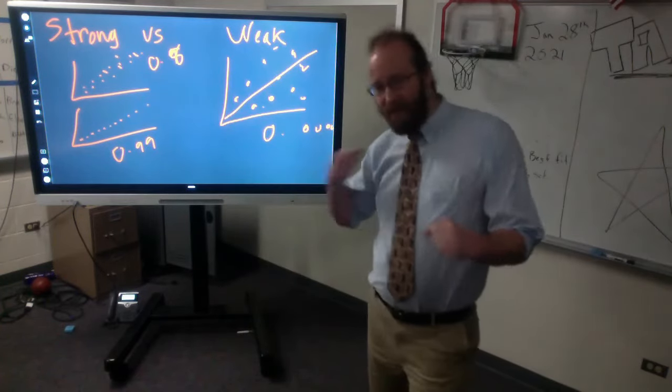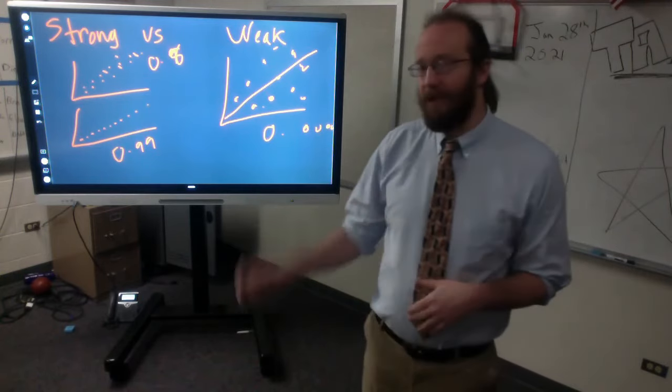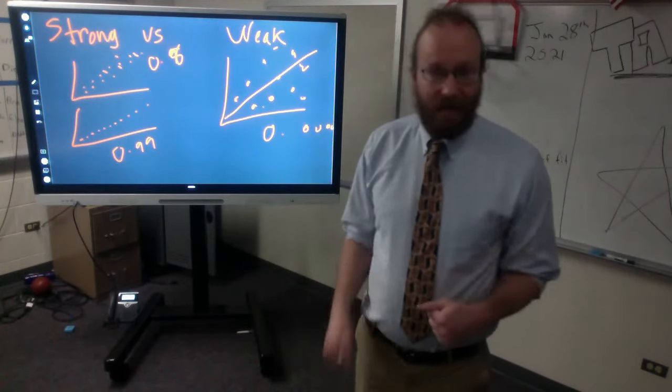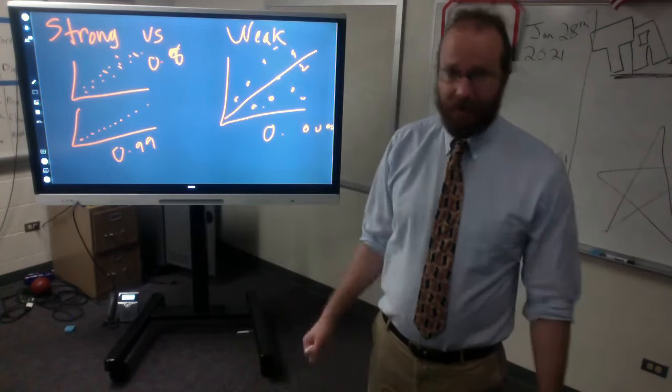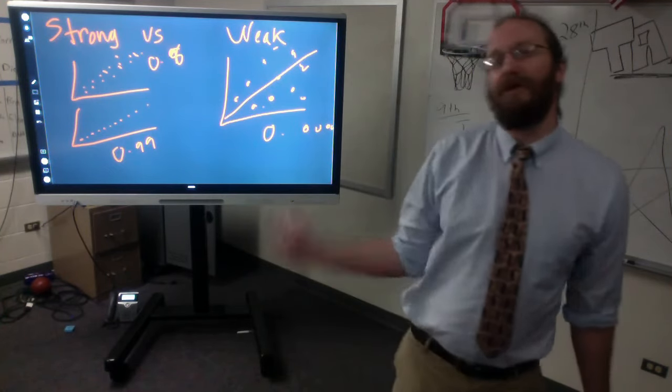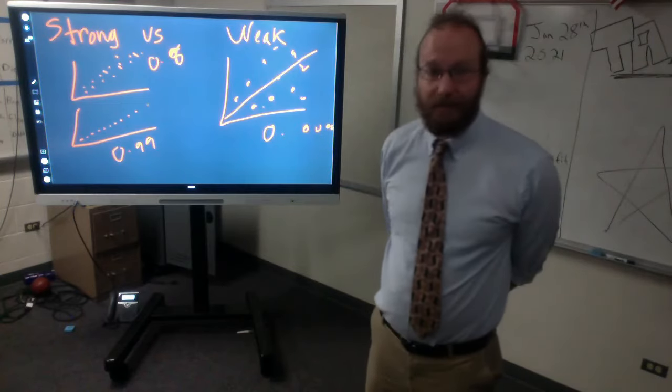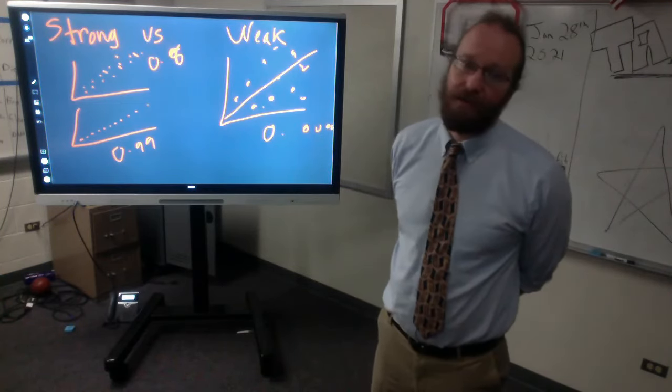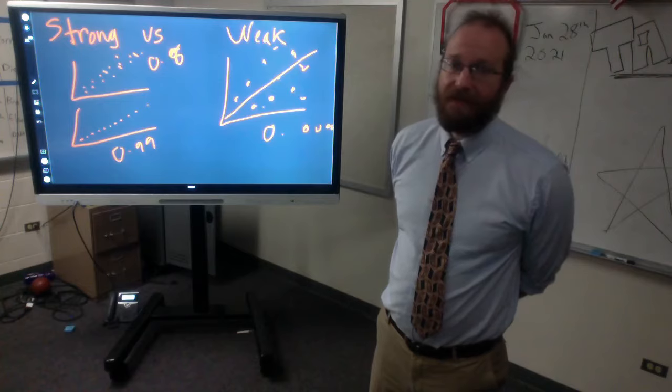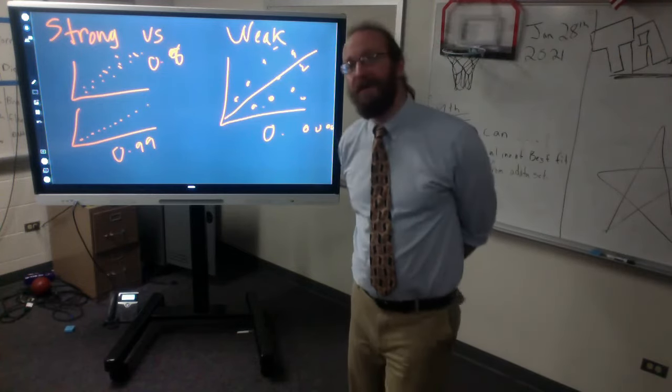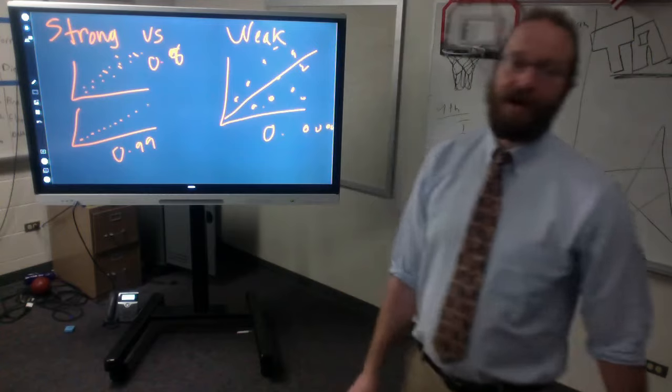If you have a perfect linear regression, your extrapolation is also perfect. Your interpolation is perfect. The closer your R value, the closer your regression, your distance from the line is to perfect, the better your predictions will be.